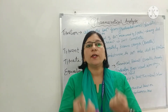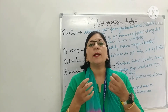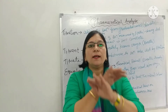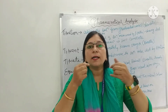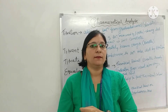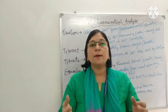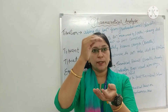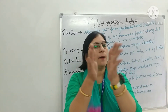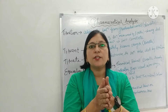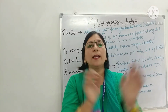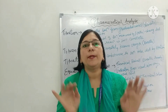ऐसा reagent जो help करता है हमको visual end point को determine करने में, उसको indicator कहते हैं। After the reaction between the substances and the standard solution is complete, the indicator gives a clear visual change — either a color change or the formation of turbidity in the solution being titrated. जब reaction complete हुई, तो indicator ने हमको color change दिखाया। Color change हो सकता है — pink, red — या turbidity आ जाए, मतलब solution whitish हो जाए।